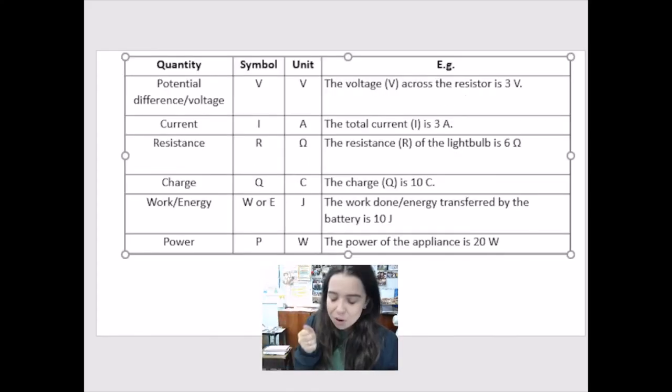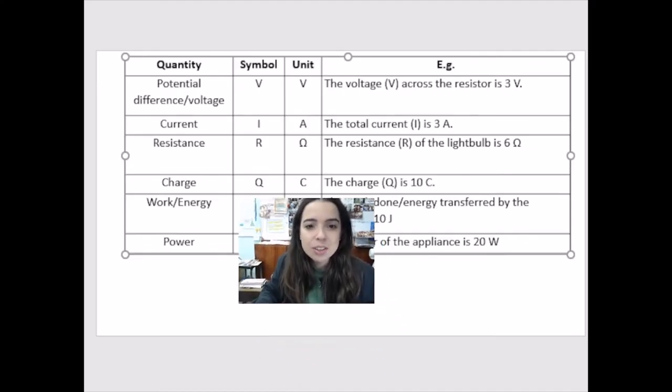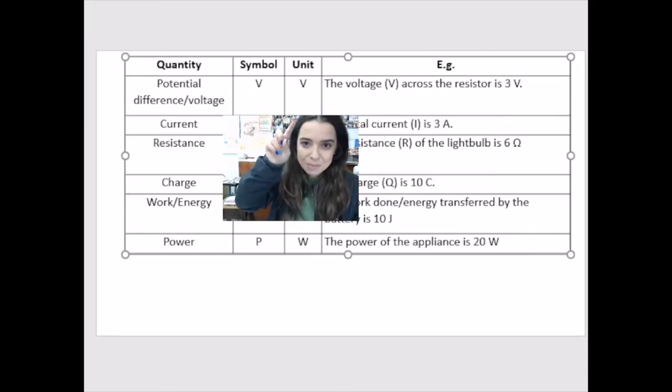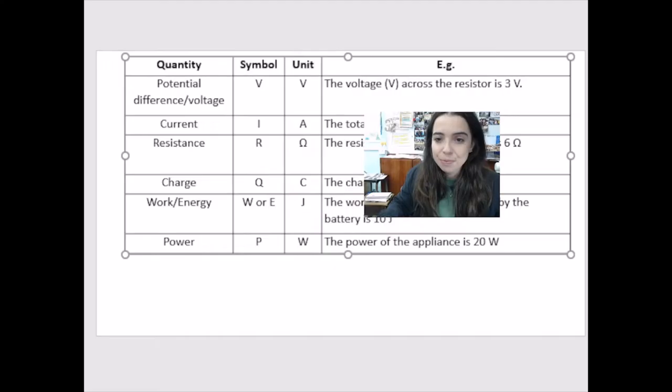What I've done here, just to drive my point home, just so you know what I'm talking about, these are the quantities, the symbols, the units, and an example of how you would state in a question how they would say in a sentence. So if we look at potential difference over here, potential difference, the symbol is V, but the unit is also V. So if we say the voltage, the voltage V across a resistor is three volts, three V.